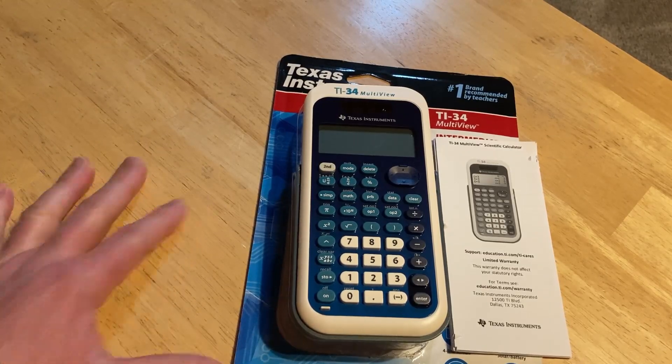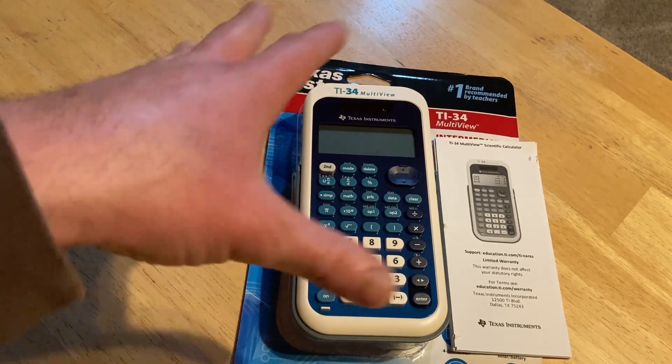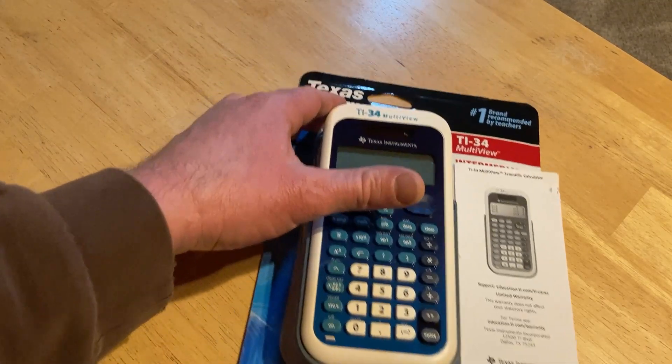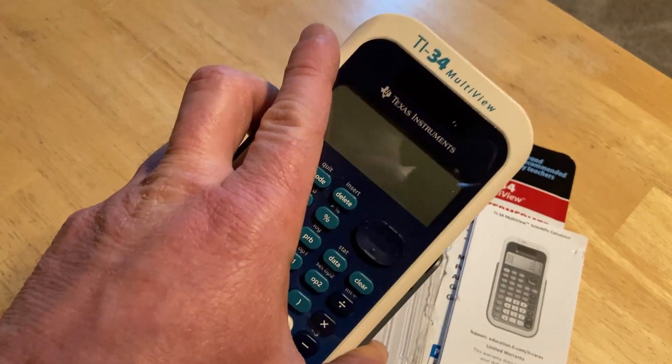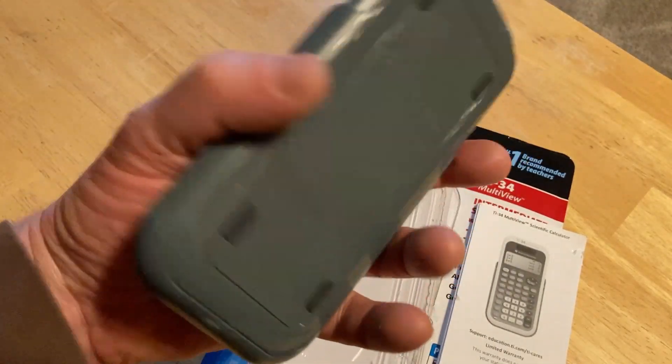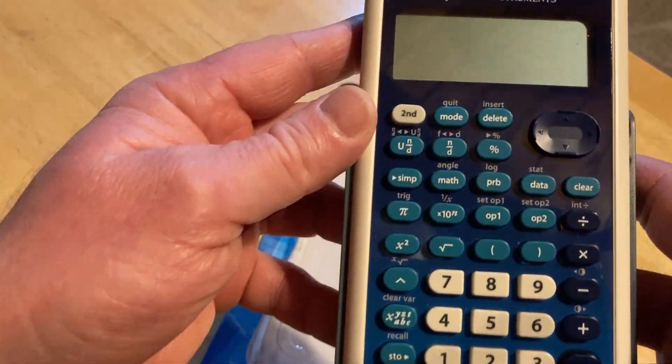This one is really interesting because it has a cool display. In this video, we're taking a look at this calculator by Texas Instruments. This is the TI-84 Multi View. What makes this calculator special is it has what's called Math Print. Let me show you.